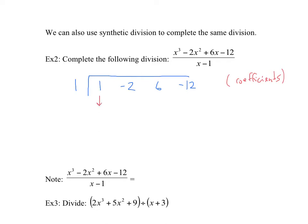These are the coefficients of the numerator. Drop the first number down every time — drop the 1. Then multiply 1 times 1 to get 1, and add: negative 2 plus 1 is negative 1. Repeat: 1 times negative 1 is negative 1. Then 6 minus 1 is 5, multiply 1 times 5 which is 5, and the final subtraction gives negative 7.